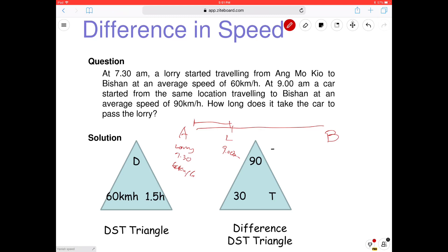So we can draw DST. D is equal to speed, 60 times time. Alright. So here will be 60 times 1 and a half is actually 90km. So the lorry has already travelled 90km. Now we haven't gotten to the minus part yet. We're still at this part.